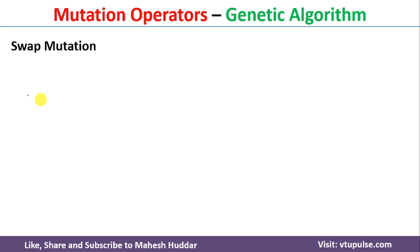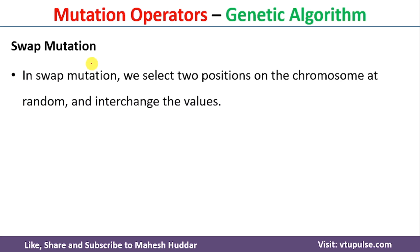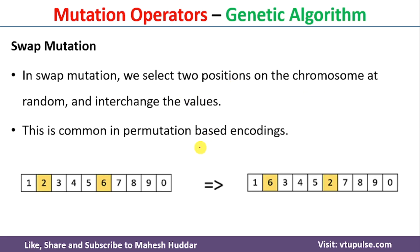The next mutation operator is the Swap mutation operator. In this operator, we select two positions — or two genes — of the chromosome and then interchange their values. For example, with the chromosome under consideration, we select a first gene and a second gene randomly. We then swap the values of these two genes, so this gene becomes 6 and the other becomes 2 in this particular case.